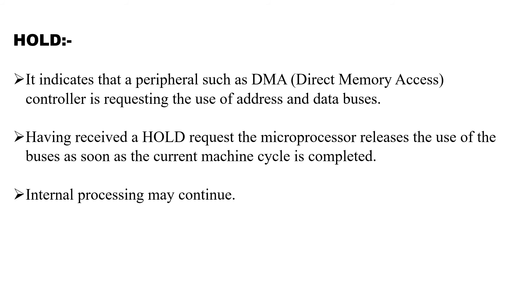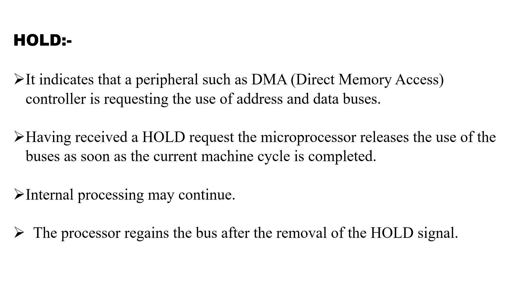If there is no internal processing, the microprocessor will go to sleep mode. HOLD indicates that the peripheral such as DMA is requesting the use of the bus — HOLD is equivalent to bus request. Once the HOLD is received, the microprocessor releases the use of the bus as soon as the current task is completed. The processor regains the bus after the removal of the HOLD signal. Once the transfer has been done, the bus control automatically goes back into the hands of the microprocessor. Only for a short period, until data is transferred from one device to another, the buses will be in the control of the DMA.